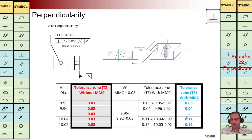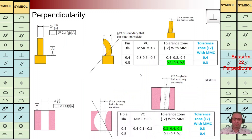The last example for today: the pin diameter is between 9.4 and 9.5. We have the perpendicularity symbol with the diameter symbol, Tz 0.3, and a modifier. The axis of this pin should be perpendicular to reference plane A. In the figure at top middle we can see the axis of this pin is not within the tolerance zone, so we need to control the orientation of this pin.